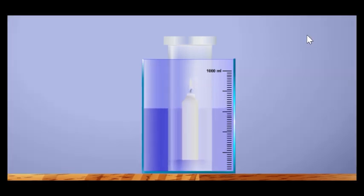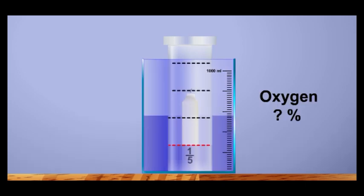After a few seconds, the candle extinguishes and water rises in the gas jar. The water level rises up to about one-fifth of the height of the gas jar. Can you explain why? What can you say about the percentage of oxygen in air?